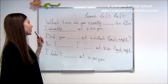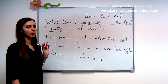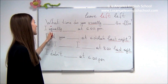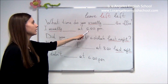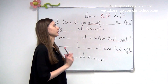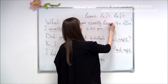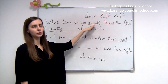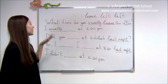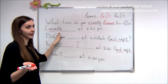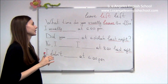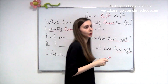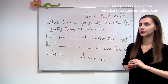Let's remember the present simple tense when we talk about usual activities. If we speak about something we do usually, we say: 'What time do you usually leave the office?' So you need to use 'leave.' Don't forget that you also need the helping verb 'do' when we speak about usually. And the answer is: I usually leave at 6 p.m.